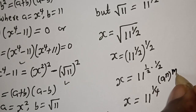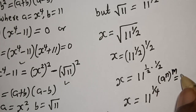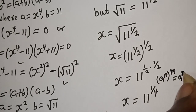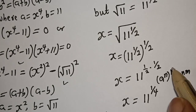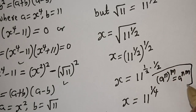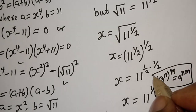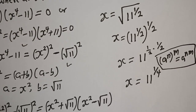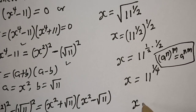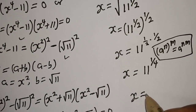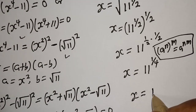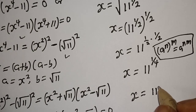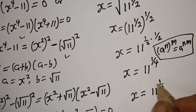Using the exponent rule — a raised to power n, raised to power m, equals a raised to power n times m — square root of 11 is 11 raised to power 1 over 2, so s equals 11 raised to power 1 over 2, raised to power 1 over 2. Therefore, our final answer is s is equal to 11 raised to power 1 over 4.